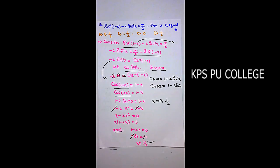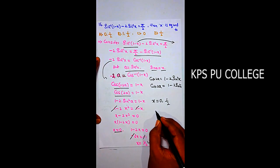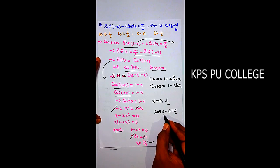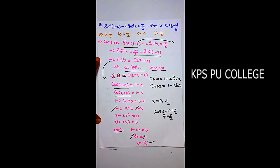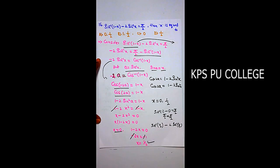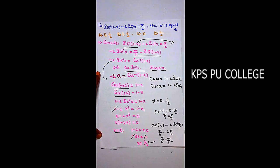For x = 0: sin⁻¹(1) - 2·sin⁻¹(0) = π/2 - 0 = π/2. The equation is satisfied. For x = 1/2: sin⁻¹(1/2) - 2sin⁻¹(1/2) = π/6 - 2(π/6) = π/6 - π/3, which does not equal π/2.